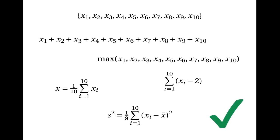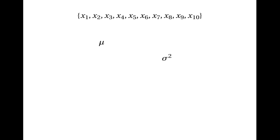So a statistic is anything you can calculate using only the numbers in the sample. This begs the question: what isn't a statistic? Well, the population mean isn't a statistic, and nor is the population variance, because these are parameters of the overall population, which you can't know just by looking at the numbers in a random sample. Likewise, calculations that involve the mean and the standard deviation of the population aren't statistics.